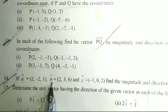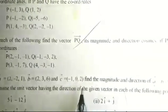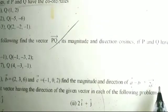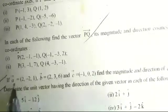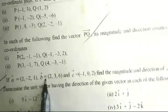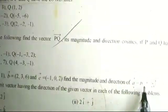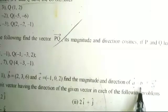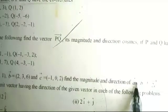If vector a equals to (2, -2, 1), vector b equals to (2, 3, 6), and vector c equals to (-1, 0, 2), then find the magnitude and direction of a vector minus b vector plus 2c vector.